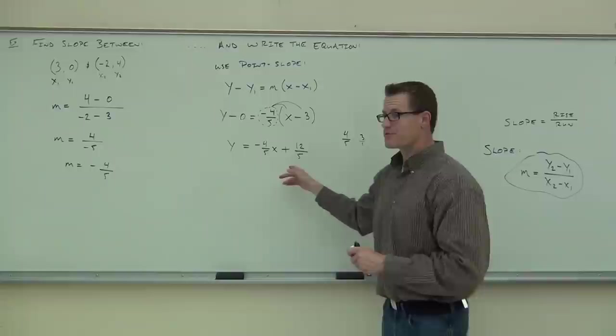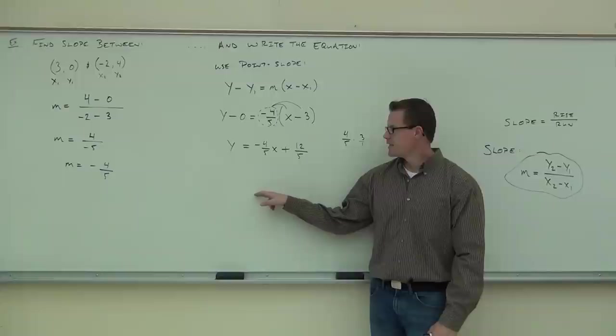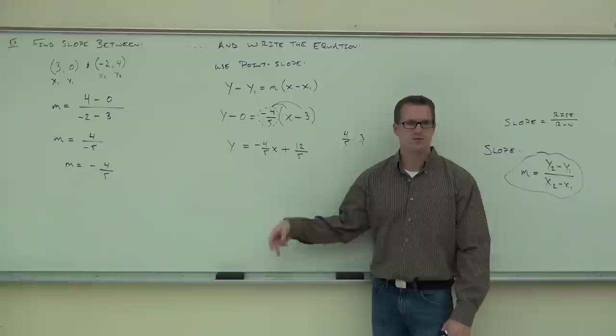Could you still graph that? What's my y-intercept? Twelve-fifths — or about two and two-fifths. That's kind of an awkward number, and then I'd somehow go down four and to the right five. That's how this line is sloped.